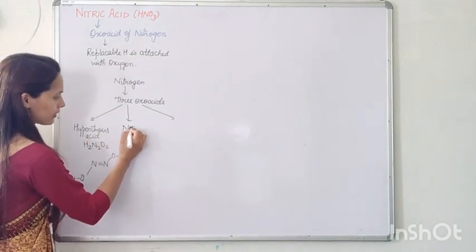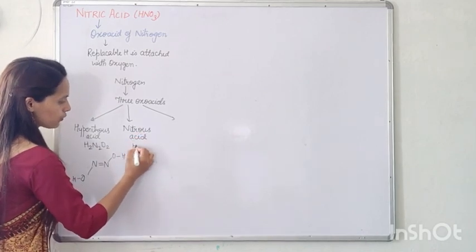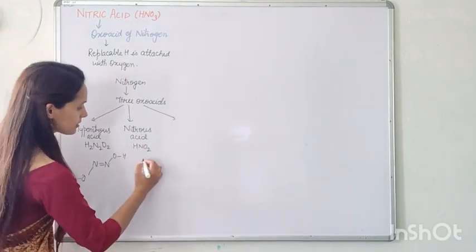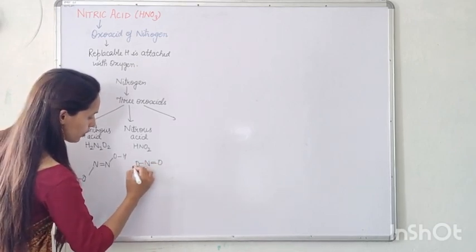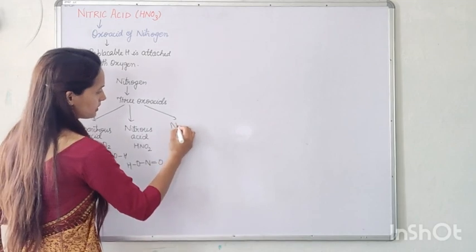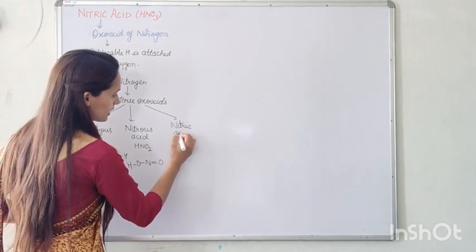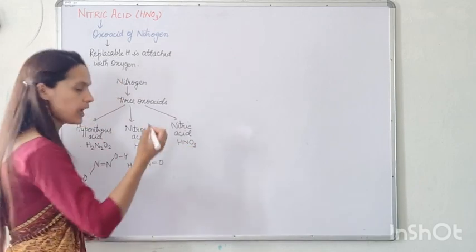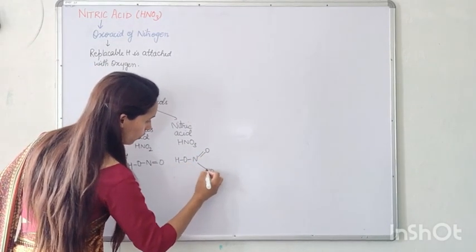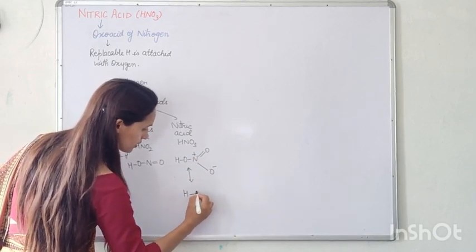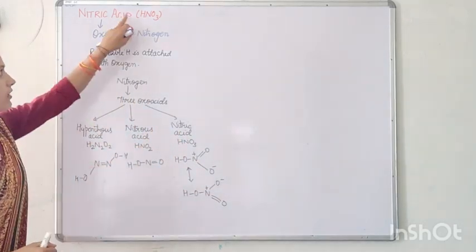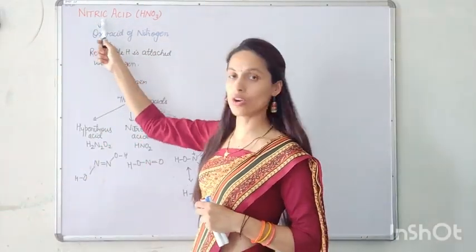The next oxoacid is nitrous acid, with formula HNO2. Its structure is N double bond O, single bond O, single bond H. The third, and main oxoacid of nitrogen, is nitric acid, with formula HNO3. Its structure has two resonating forms: H-O-N(=O)-O⁻ (with a positive charge on N), because one structure cannot explain all the properties of nitric acid.